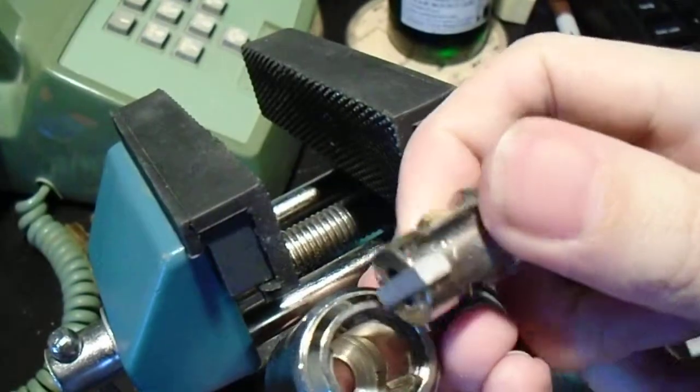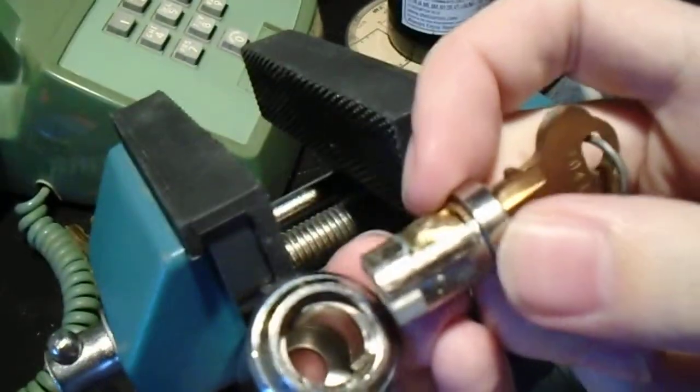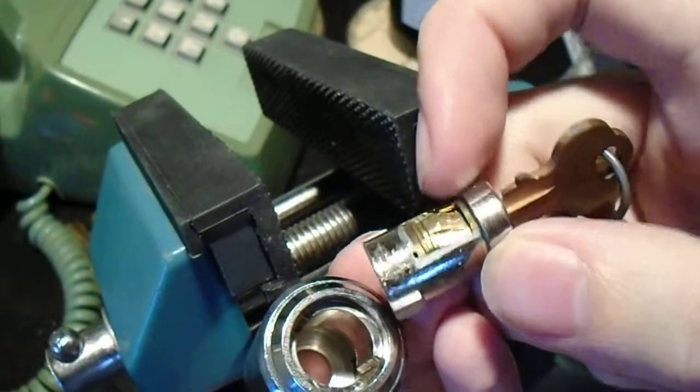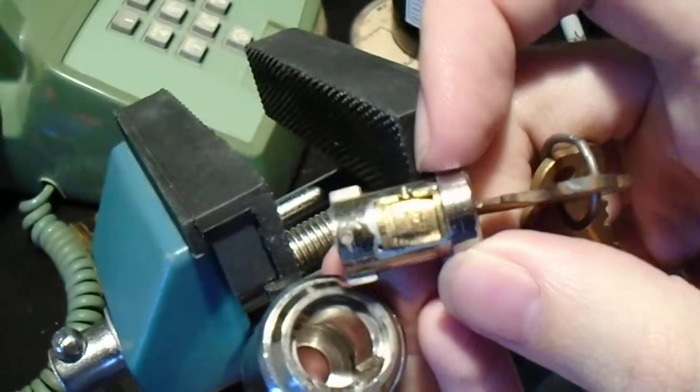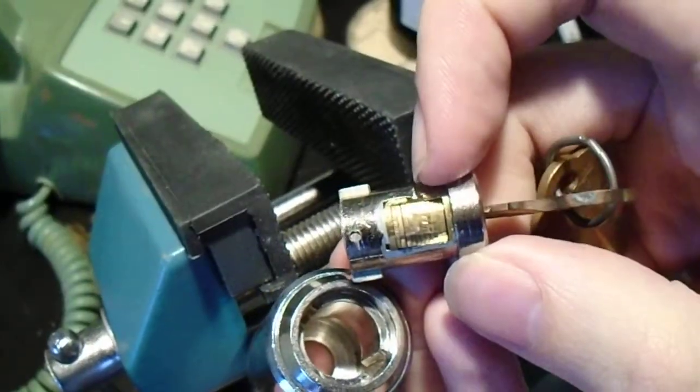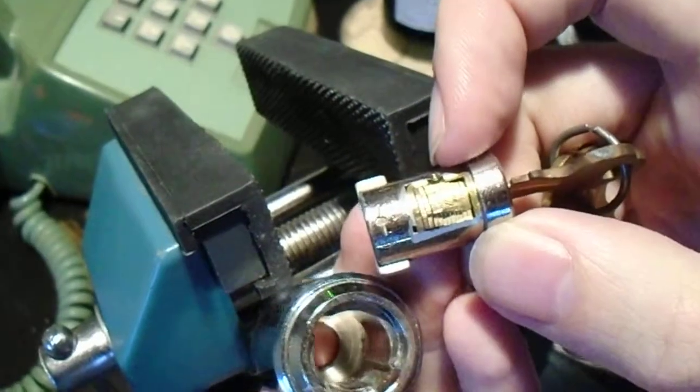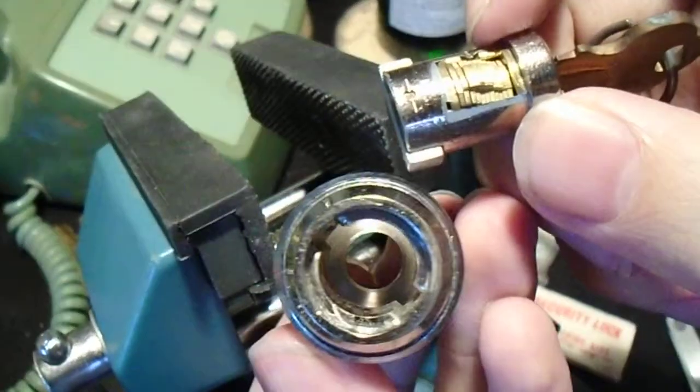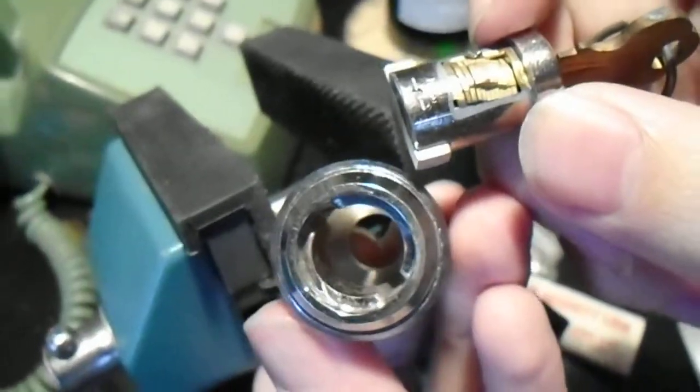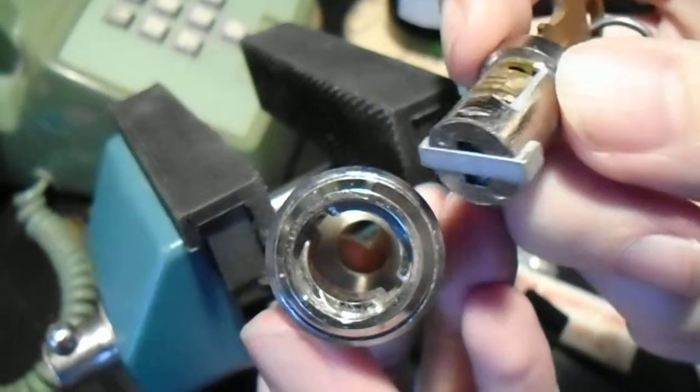You'll notice it has these locking lugs that are set 90 degrees off from where the wafer packs are, and you'll see they're very dense in there. I'll bring out another wafer lock in a minute to show you the difference. And if you look in there, the inside is pretty bare, and there's no tailpiece.